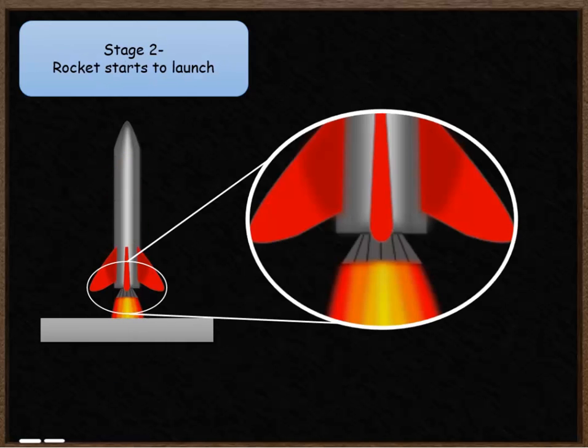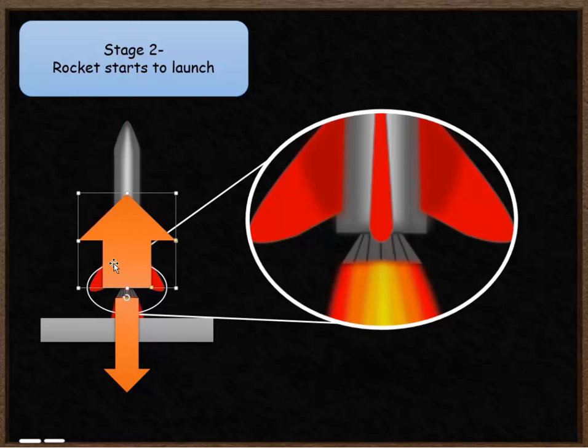The second stage of our rocket's journey is that it starts to launch. So again we have a downwards force of gravity holding the rocket back. That force that we had at the beginning, that upthrust reaction force from the ground has now been replaced with a larger force arrow. This is representing the upwards thrust generated by the fuel. So this force is slightly larger. That's going to overcome this downwards force of gravity. That rocket is going to start moving upwards.